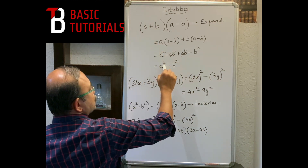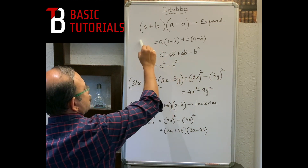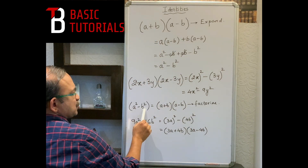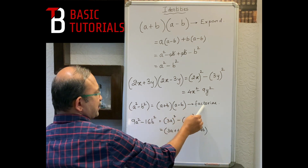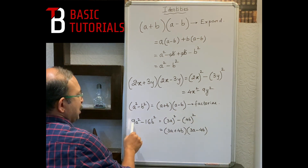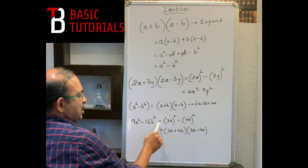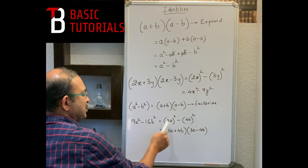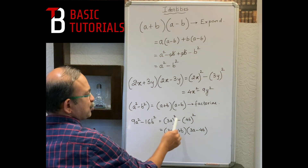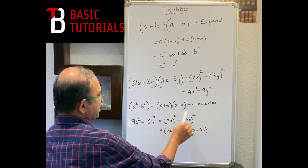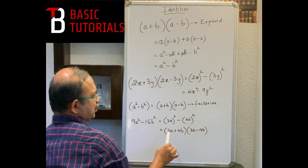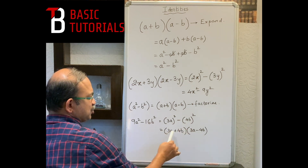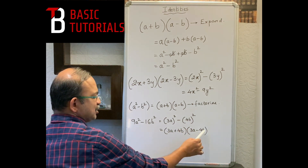Going the other way: a² - b² gives you (a+b)(a-b), which is factorized. For example: 9a² - 16b² = (3a)² - (4b)², since 4² = 16. This is a term and that is b term, so a² - b² = (a+b)(a-b), giving us (3a + 4b)(3a - 4b).